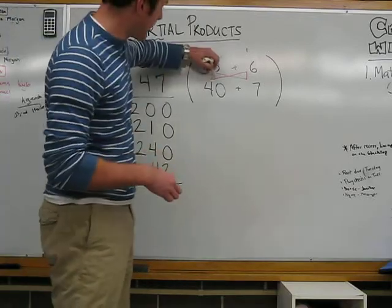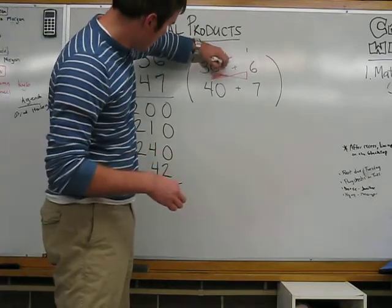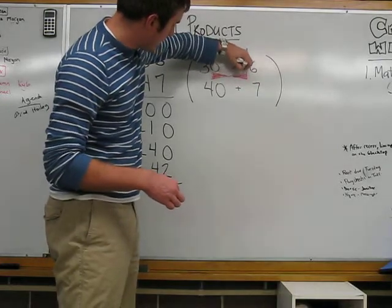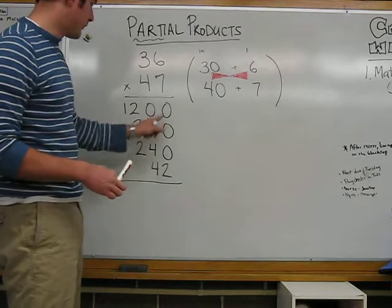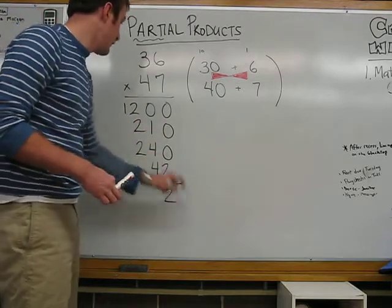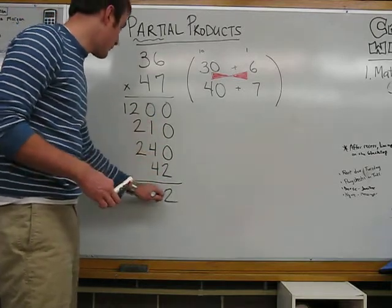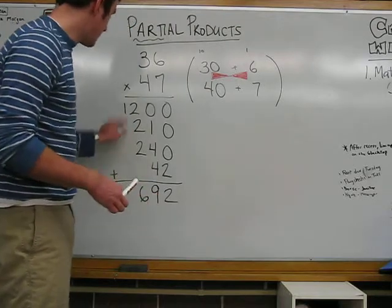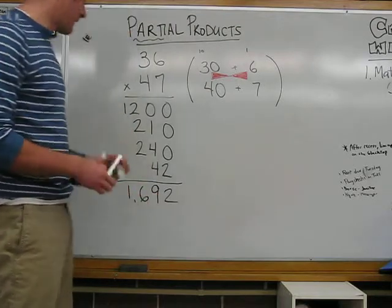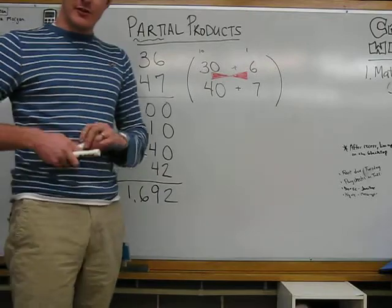Now, I see that we do have our bow tie, which means we've done all the correct ones. Now, all we have to do is add. 0 plus 0 plus 0 is 2. 0 plus 1 plus 4 plus 4 is 9. 2 plus 2 plus 2 is 6. And 1 comes straight down. So, we have an answer of 1,692.